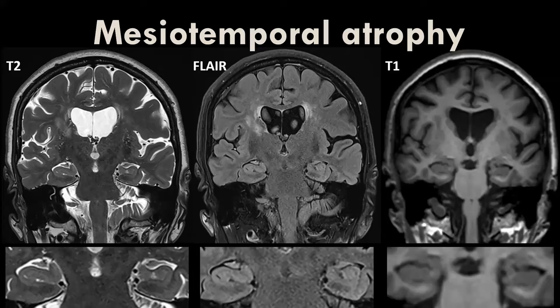The next scale is the mediotemporal atrophy (MTA) scale. Also evaluate mediotemporal atrophy on FLAIR or T1-weighted images — on T2-weighted images the choroid fissure looks much wider than on FLAIR or T1. In our institution we use reformatted coronal T1-weighted images from a 3D T1 set, rather than separate coronal FLAIR sequences.